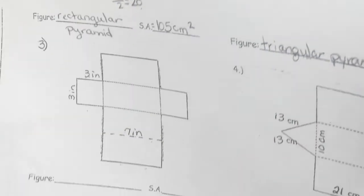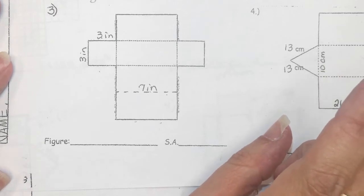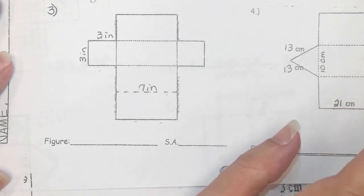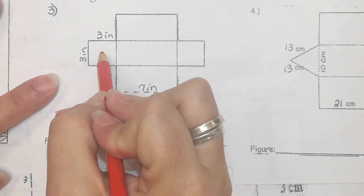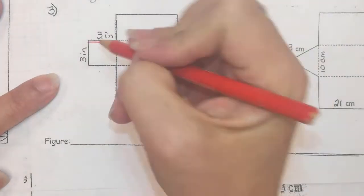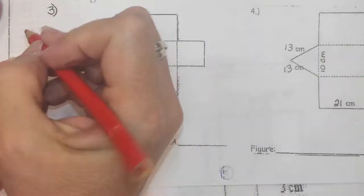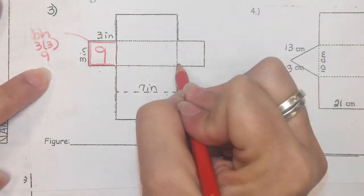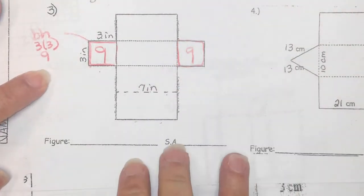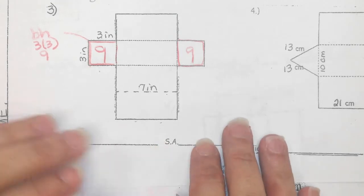My base is right here, it is 20, my height is 15. That gives me 300 divided by 2, which is 150. 150 is one triangle. If they're all congruent, that means that they are all the same, they're all 150s. Add it all up, that would be 600 millimeters squared, and the shape is a triangular pyramid.